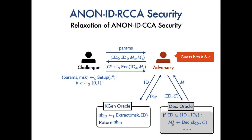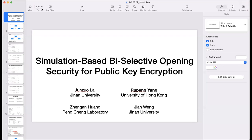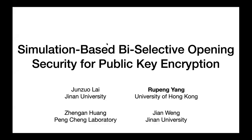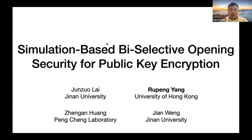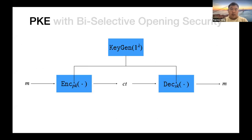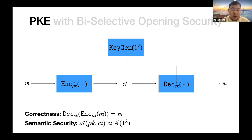Our next talk is 'Simulation-Based Bi-Selective Opening Security for Public Key Encryption,' presented by Rupong. Thanks for the introduction. Today I'm going to talk about how to define and construct a PKE scheme with bi-selective opening security. This is based on joint work with Jingzhuo Lai, Zhuo, and Jian Wong. A PKE scheme consists of three algorithms: key generation producing a public-secret key pair, the encryption algorithm which encrypts a message with the public key, and the decryption algorithm which decrypts ciphertext to recover the message with the secret key.